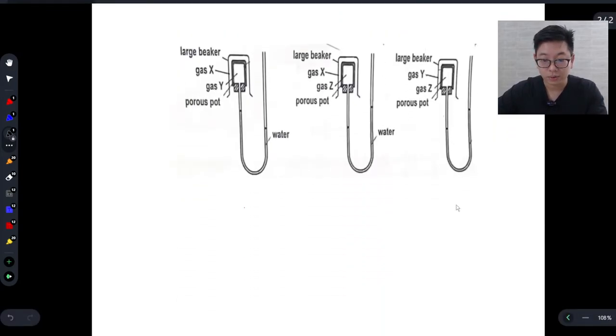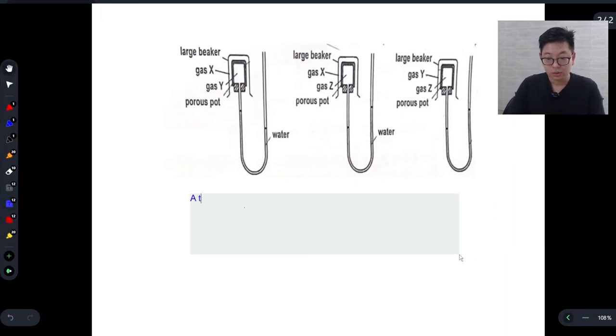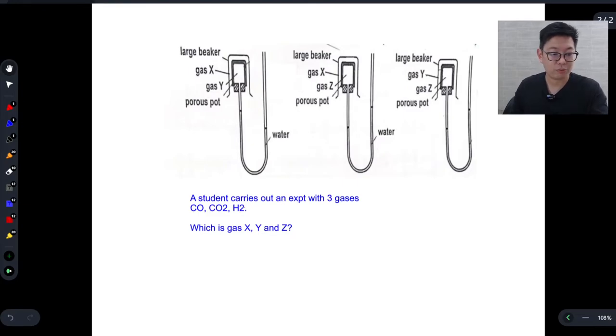So let's assume now you're given three porous pots. A student carries out an experiment with three gases: carbon monoxide, carbon dioxide, and hydrogen gas, which is gas X, Y, and Z. So let's assume we're dealing with three gases, but we don't know which is X or Y or Z based on the results. Find out.